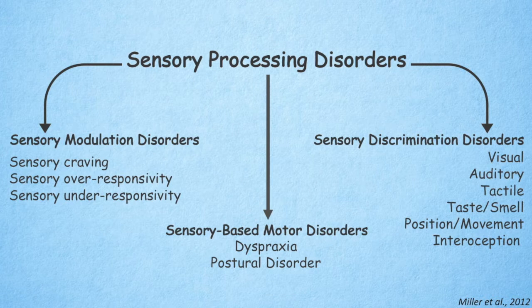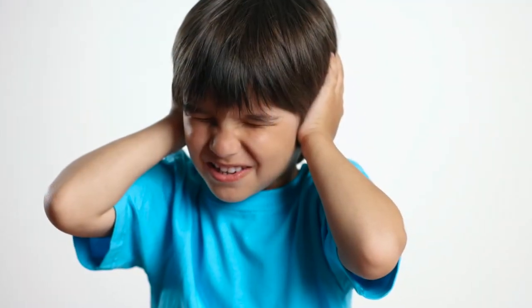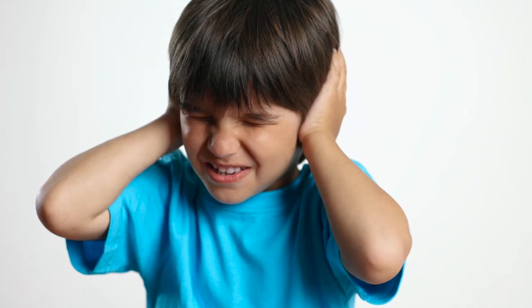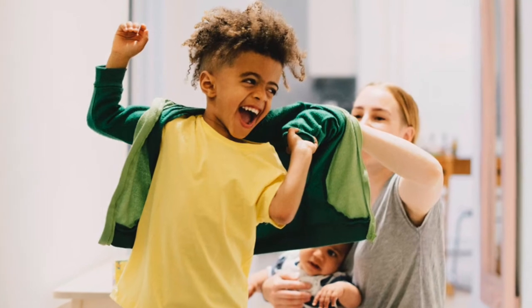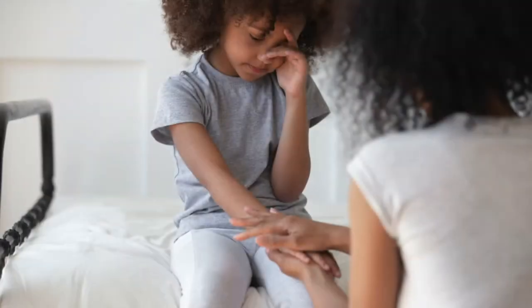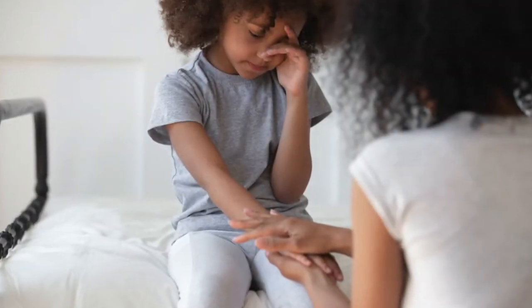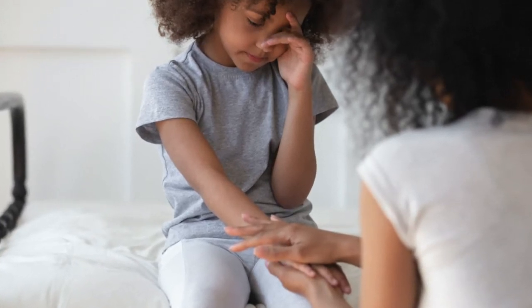There are many different types; however, the most researched are sensory over-responsivity and sensory under-responsivity. Sensory over-responsivity means automatic, intense responses to sensations, which can result in exaggerated flight, fight, or freeze sympathetic responses. This can present as emotional reactions to seemingly small events others would not find alarming.